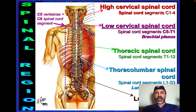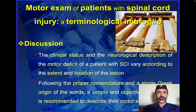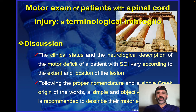Just to refresh: the higher spinal cord is C1 to C4; the low cervical spinal cord is C5 to T1, which generates the brachial plexus; the thoracic spinal cord and thoracolumbar junction is the origin of the lumbosacral plexus. The clinical and neurological description of a patient with motor deficits depends on the extent and location of the spinal cord injury, so it is very important to have proper nomenclature to describe those neurological motor deficits.